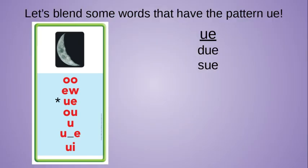Let's keep learning some more ooo words. This time we're looking at the pattern u-e. My first word says d-oo, due, like your library book is due. S-oo, sue — could be like the name, or like a lawyer is suing you.